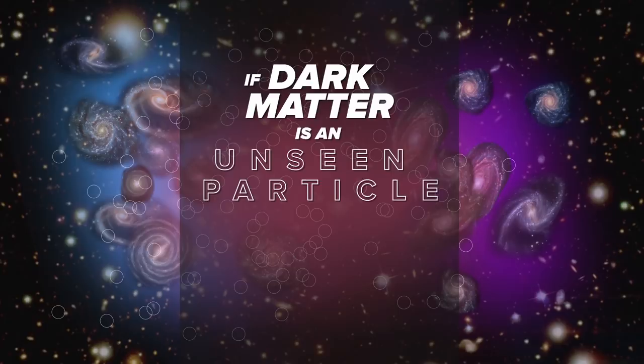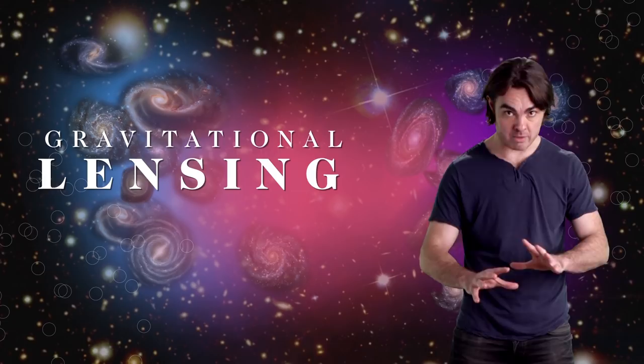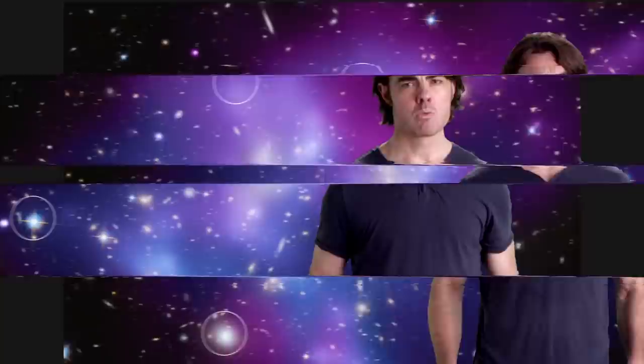How do we test this? Again, gravitational lensing. Map the mass based on the warping of light from more distant galaxies, and we see that in the bullet cluster, the dark matter is with the stars. This tells us that dark matter is a real particle, not just broken gravity. Once again, Einstein prevails.